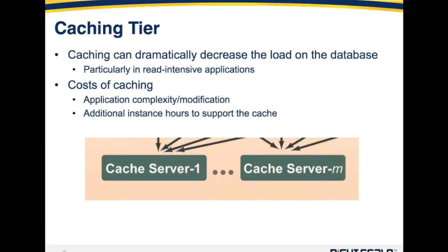Now there are some costs to caching. You do have to modify your application, so there's a little bit of complexity there. In the old school way, your application read from the database when it needed something. If you're going to use caching, your application needs to be changed to look in the cache first. If it doesn't see what it needs, then it reads it from the database and then populates the cache, so the next time a different application server or itself needs that object, it's available in the cache.